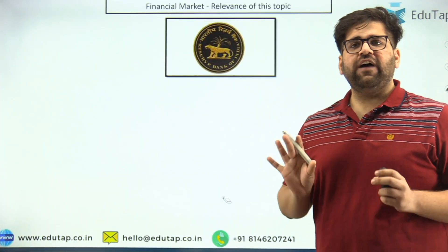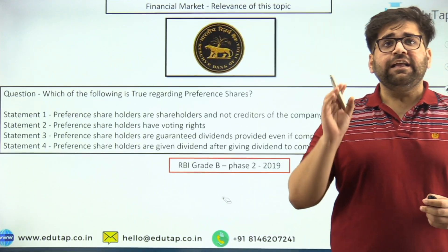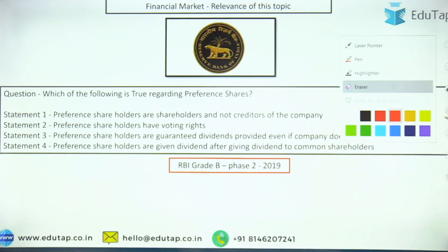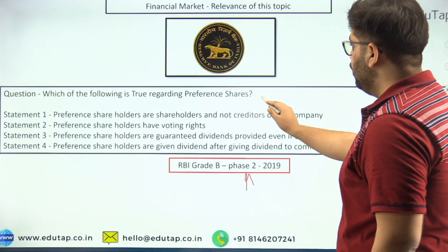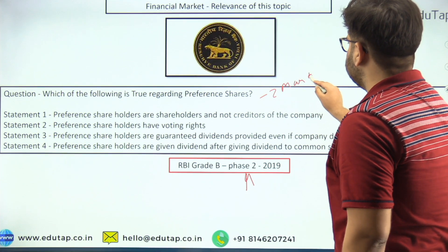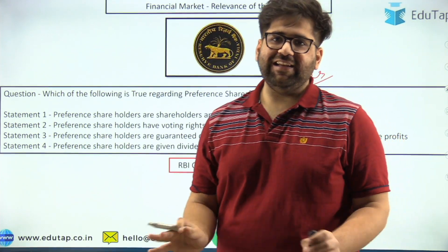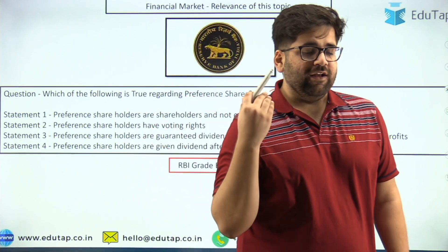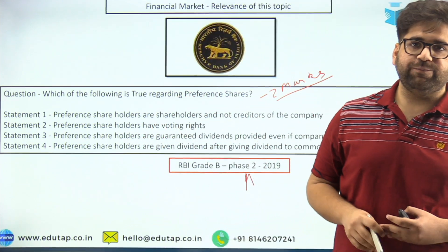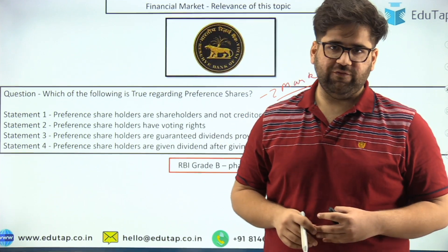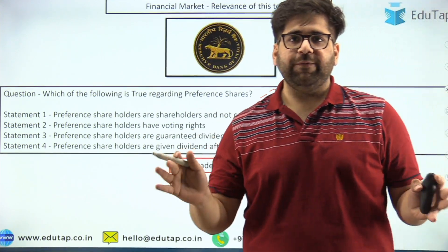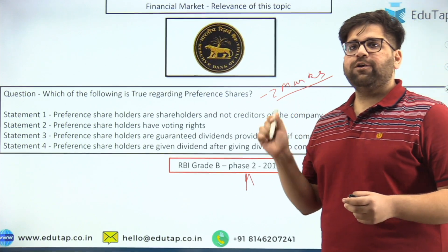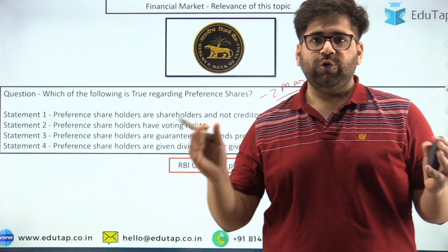If we look at the relevance of the financial market, we need to understand previous year questions as well. In 2019, RBI asked a special question regarding preference shares in phase 2, which carries 2 crucial marks. This question is very easy — it can be done in less than 2 seconds if a student has good conceptual clarity, even though phase 2 is considered the toughest part of the RBI Grade B exam.